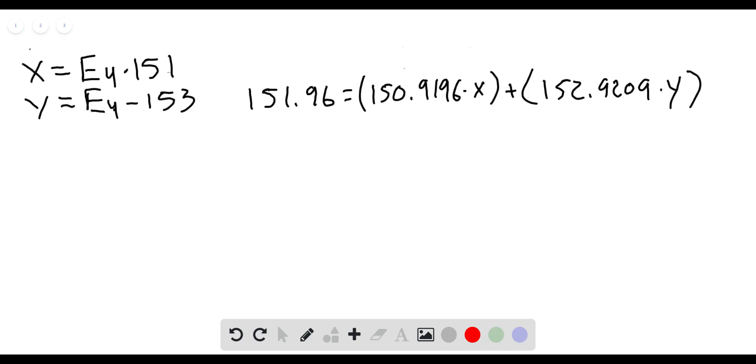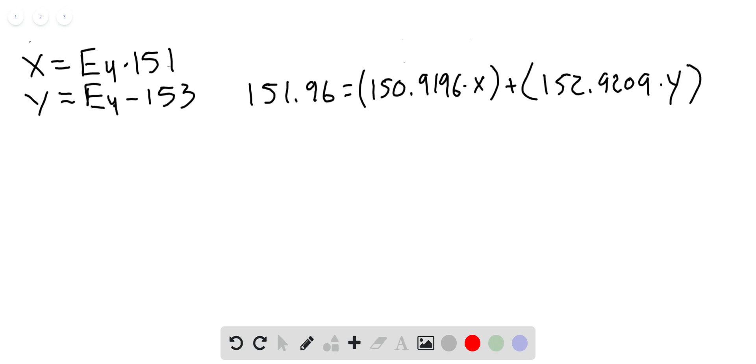This is the standard form of the equation: the average mass of the isotopes equals the actual mass of the isotopes times the mass percent, and you're going to add that to the actual mass of the other isotope times its mass percent.